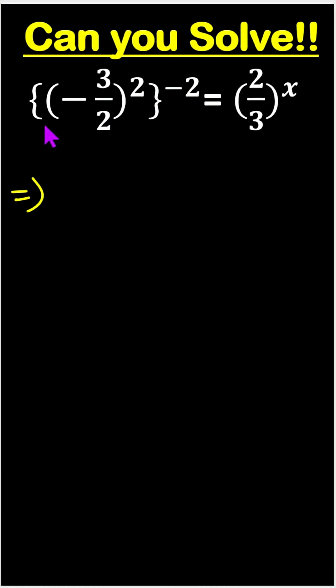So, inside the second bracket, here is a first bracket where minus 3 by 2 to the power 2 and whole to the power minus 2 equals to 2 by 3 to the power x.